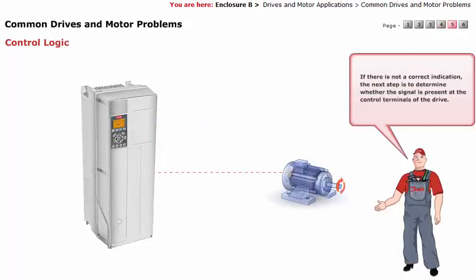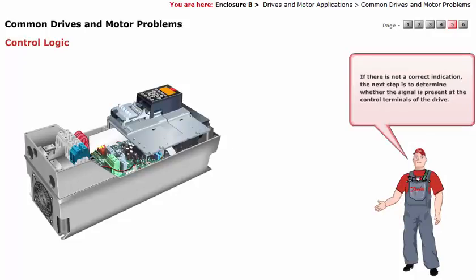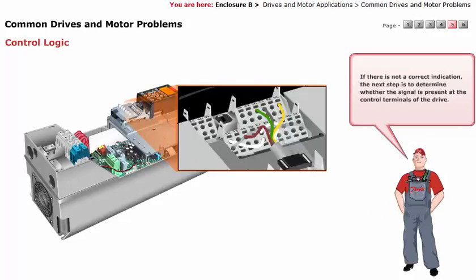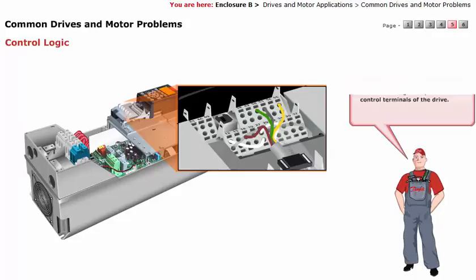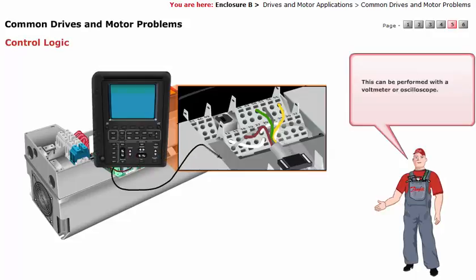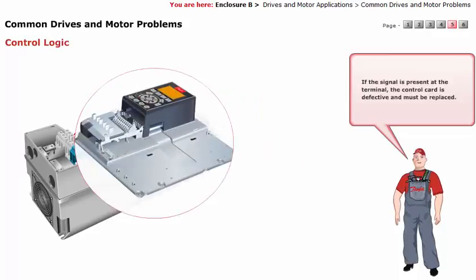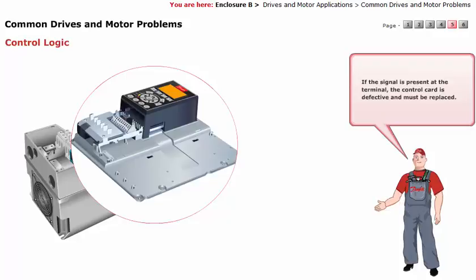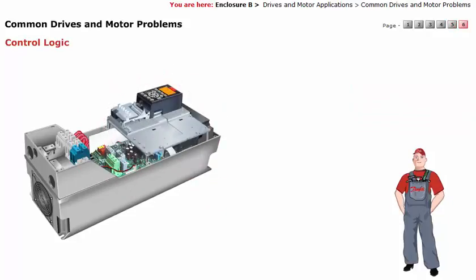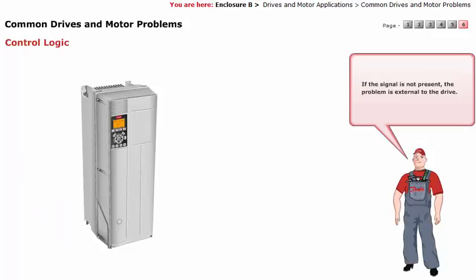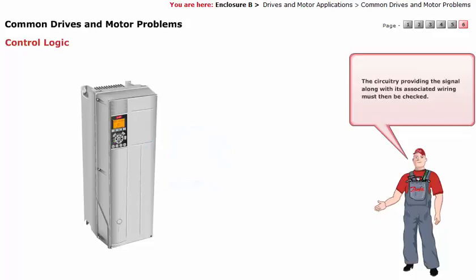If there is not a correct indication, the next step is to determine whether the signal is present at the control terminals of the drive. This can be performed with a voltmeter or oscilloscope. If the signal is present at the terminal, the control card is defective and must be replaced. If the signal is not present, the problem is external to the drive, and the circuitry providing the signal along with its associated wiring must then be checked.